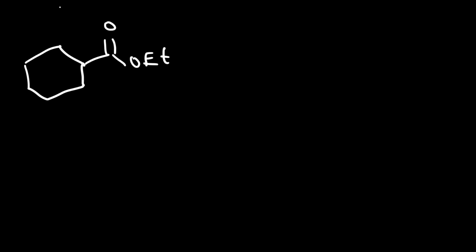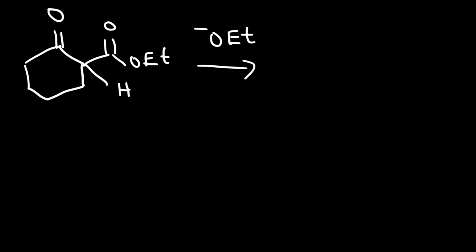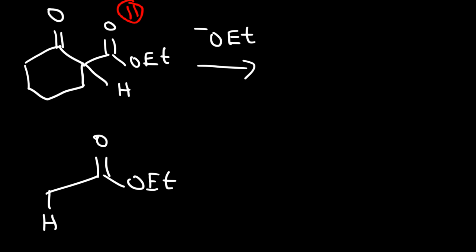Our final product looks like this — what we have is a beta-keto ester. With respect to the ester, this is the alpha carbon and this is the beta carbon, so we have a ketone on a beta carbon. Notice that we have an alpha hydrogen here, and right now the solution is still basic. For beta-keto esters, the pKa of the alpha hydrogen is more acidic — the pKa is about 11 — compared to a typical ester, whose pKa is about 25.